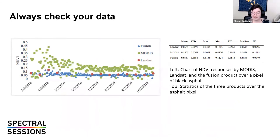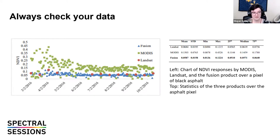Always check your data — make sure it's actually reasonable, especially when doing this kind of interpolation. For example, this was a check on an asphalt pixel. On the left, a chart of NDVI responses from MODIS, Landsat, and the fusion product over a black asphalt pixel. MODIS is very noisy — in the spring there was a lot of cloud cover, and agriculture crept into the pixel because MODIS pixels are so large. It got calmer during the drier later part of the period. We got pretty good coverage and response. At the top is a statistics chart of the three products over that asphalt pixel over time.